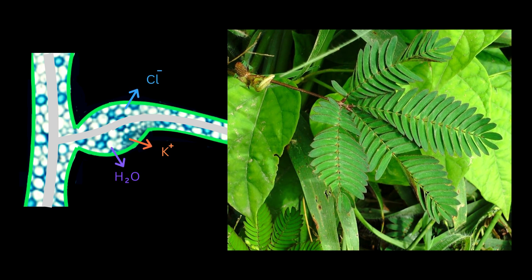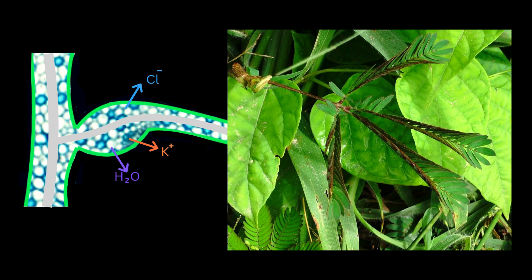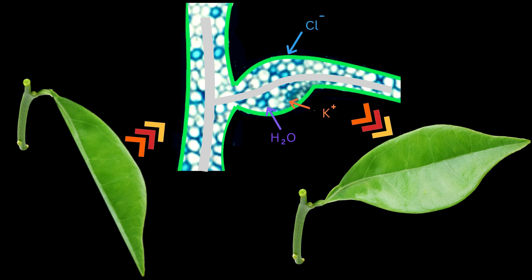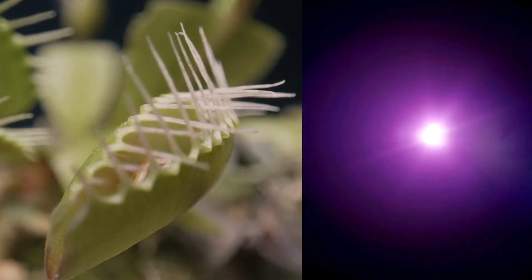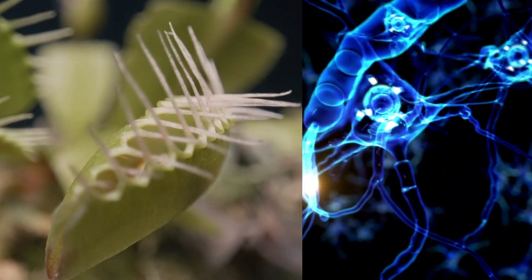For example, in the case of Mimosa pudica, the leaflets fold inward and the entire leaf droops rapidly in response to touch. After the stimulus is removed or fades, active transport mechanisms begin to restore the original ion concentrations by pumping potassium and other ions back into the motor cells. When this occurs, water re-enters the cells by osmosis and their turgor pressure increases. The cells regain their original volume and firmness, allowing the plant organ to return to its original position. The transmission of the stimulus from one part of the plant to another is facilitated by electrical signals known as action potentials.